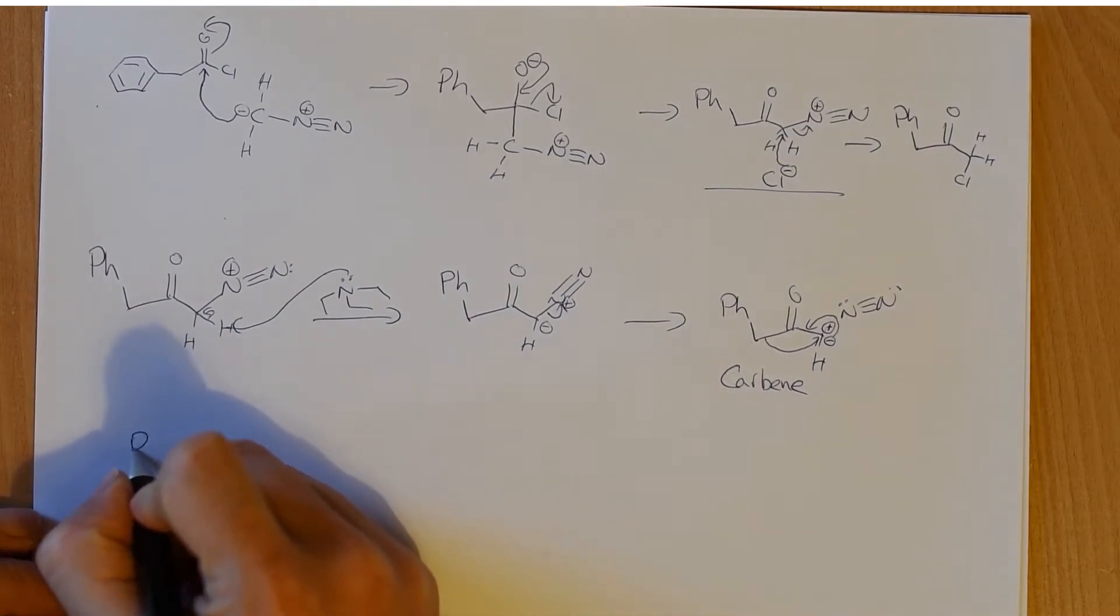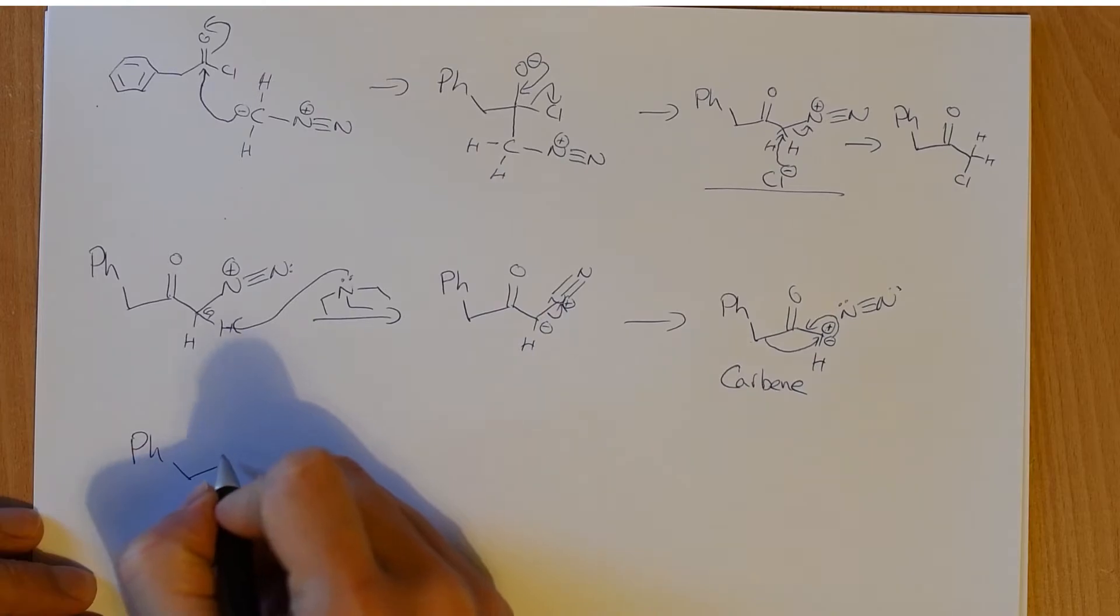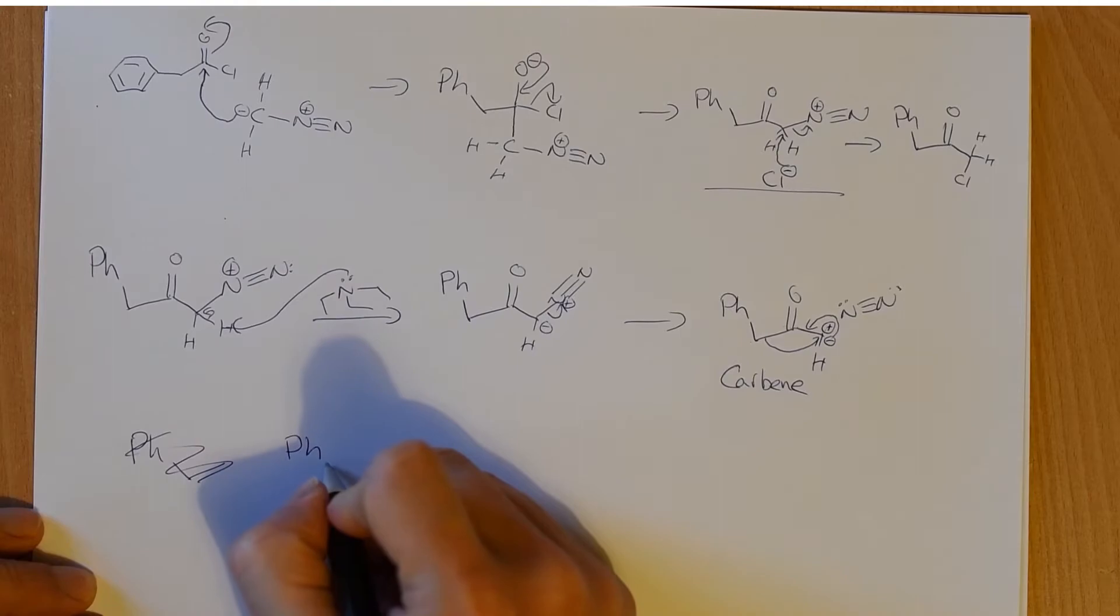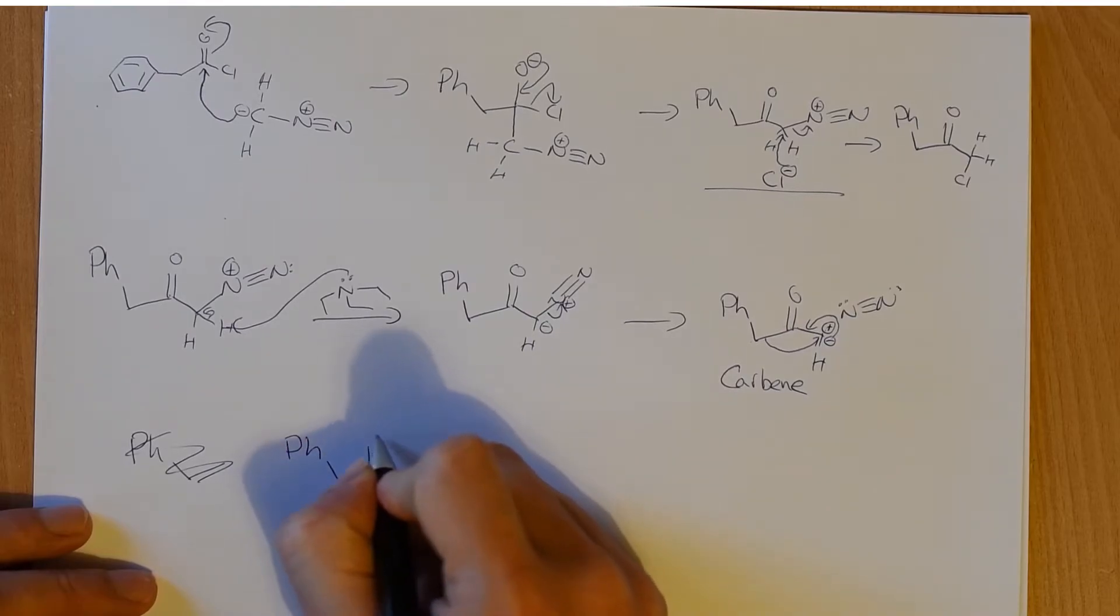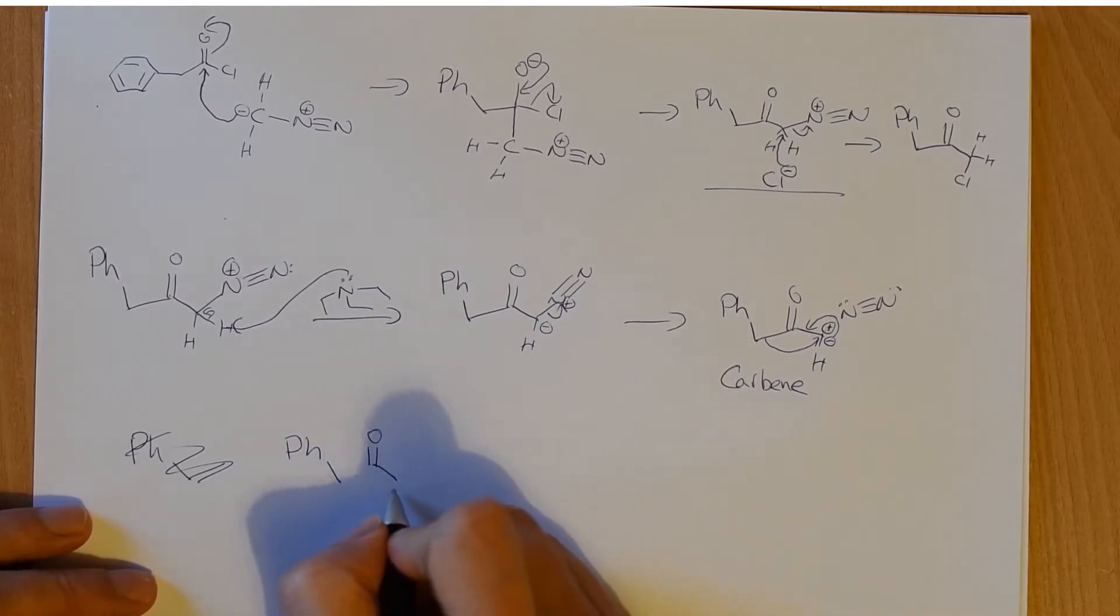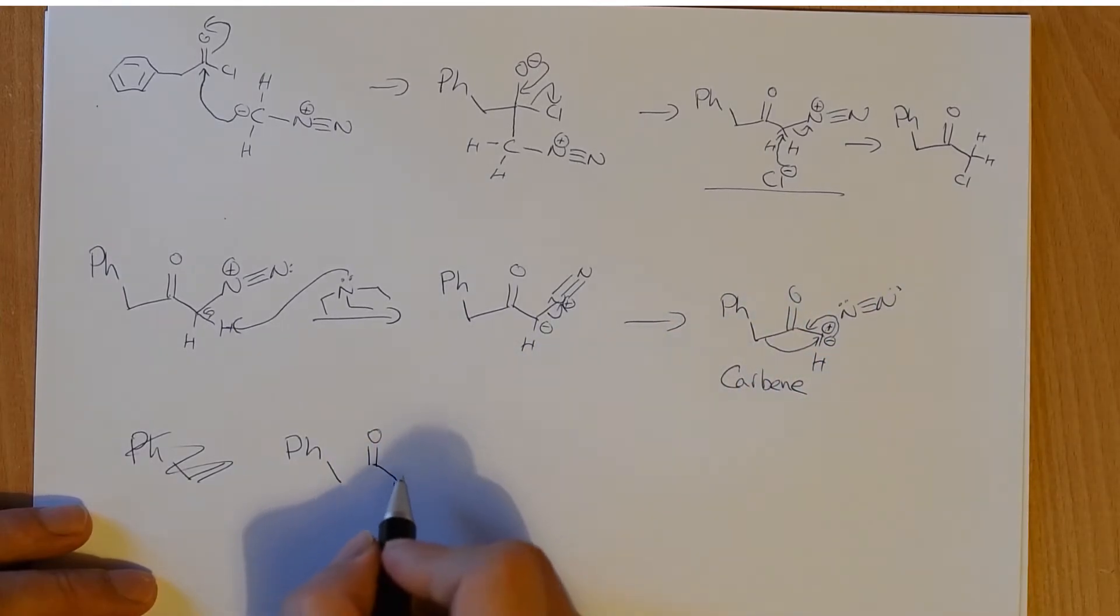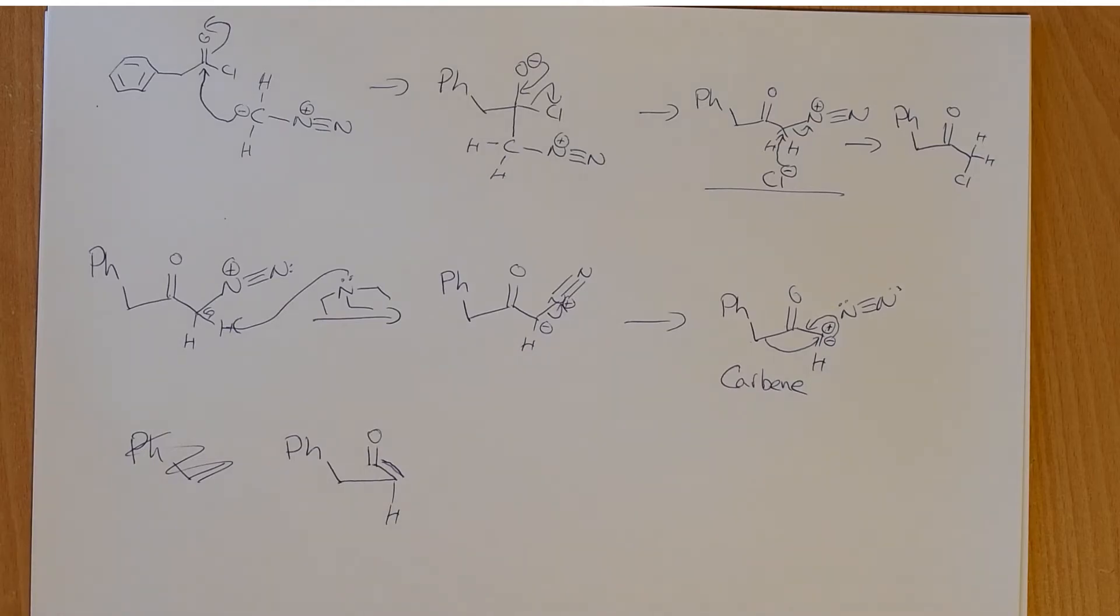Let's draw out the products of that. Everything exactly as it was, except for the bonds that we moved. That bond is gone. That's still there. That's still there. That hydrogen is still there. And our nitrogen gas is long gone. And what did we do? We took this pair of electrons that was here and made a new carbon-carbon bond. And we took the pair of electrons that was the lone pair on the carbon and made a new carbon-carbon double bond. So we've made a ketene.